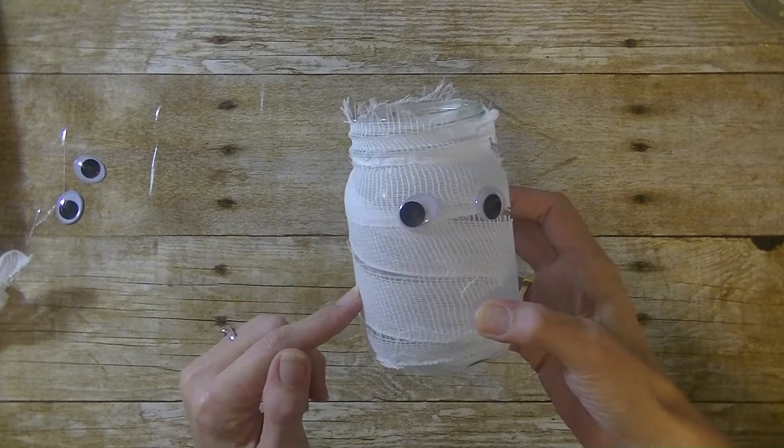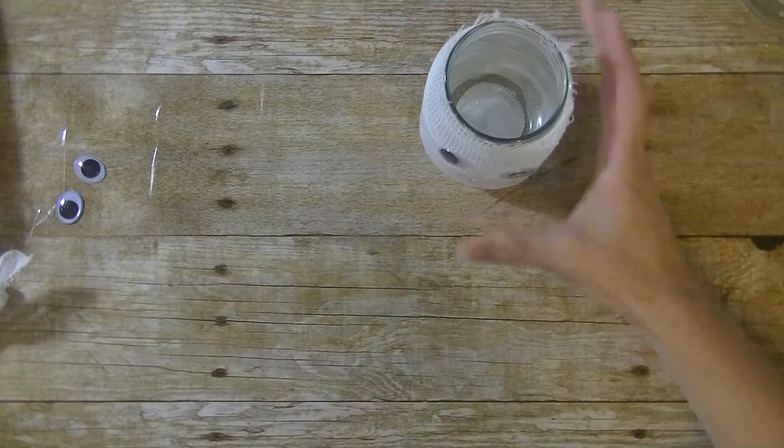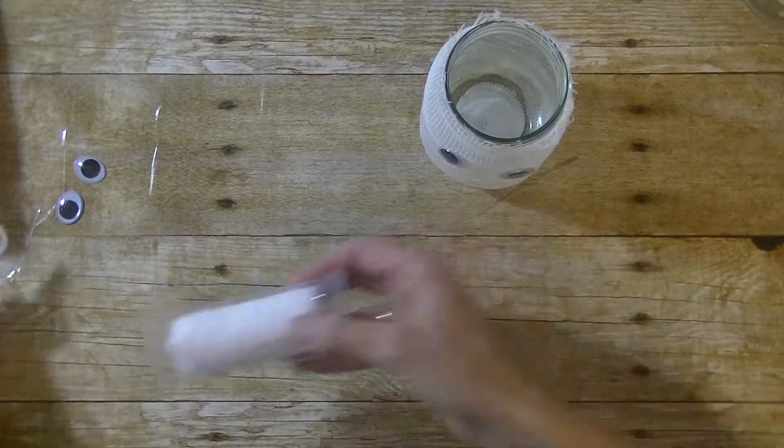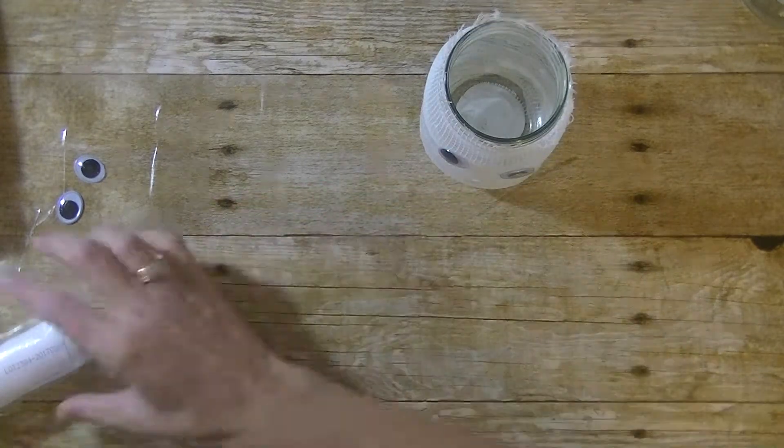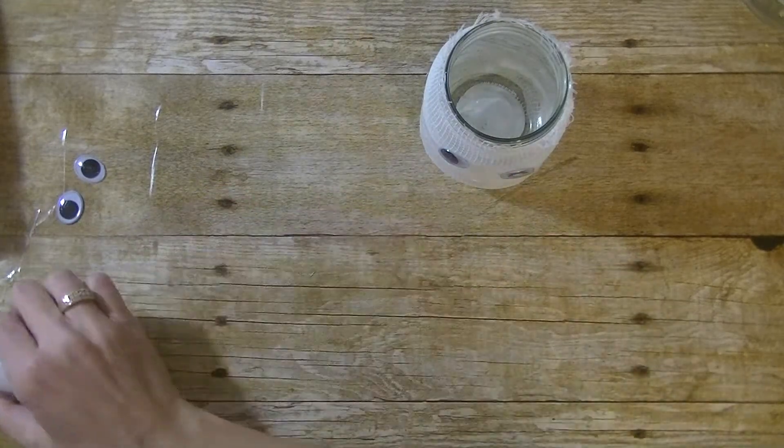All you need is a jar, some gauze, googly eyes and some glue. The gauze I'm using came in a roll and I took that roll and I cut it in half. This was actually leftover gauze I had but if you're using it in a roll just go ahead and cut the whole roll in half.